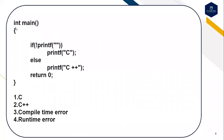This is the fifth question: if(!printf("")) print 'C', else print 'C++'. Predict the output of this code. The options are: first option C, second option C++, third option compile time error, fourth option runtime error.